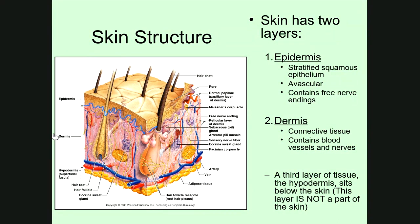The epidermis is composed of a stratified squamous epithelium — many, many layers of flattened squamous-shaped cells. Because the epidermis is an epithelium covering a body surface, it is avascular, meaning it doesn't have a blood supply. There aren't any blood vessels that penetrate up into that stratified squamous epithelium. However, it does have free nerve endings, which is why you can sense changes in temperature and other things on your skin.